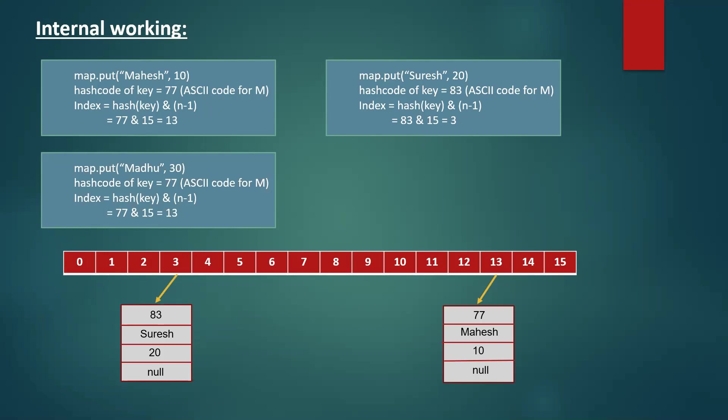The third entry has the same hash code as the first entry — both keys start with 'M', so the index will also be 13. This is a hash collision. We already have an entry at index 13, but we need to insert another entry at the same index. To resolve this, we keep both entries at index 13 — the existing node's next reference is pointed to the new entry, similar to a singly linked list. If more entries come with the same index 13, we continue extending the node reference chain.